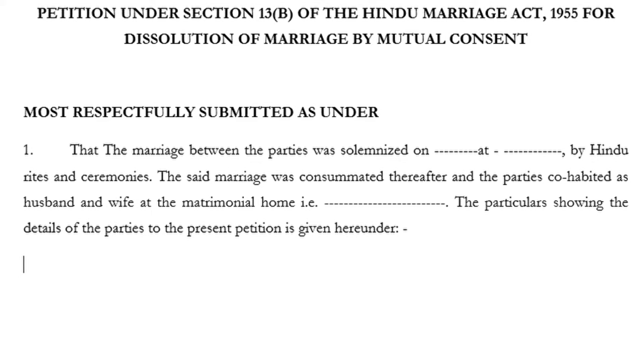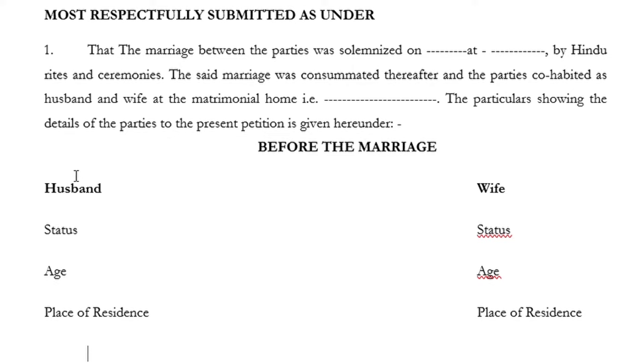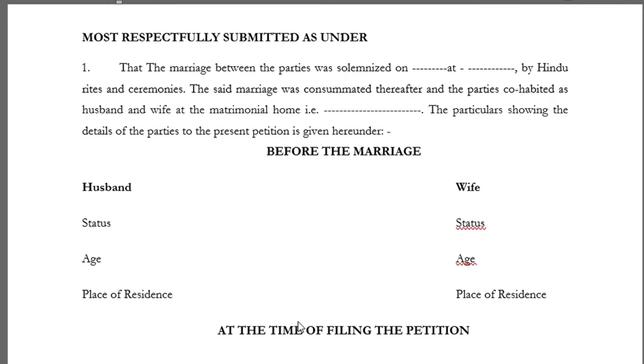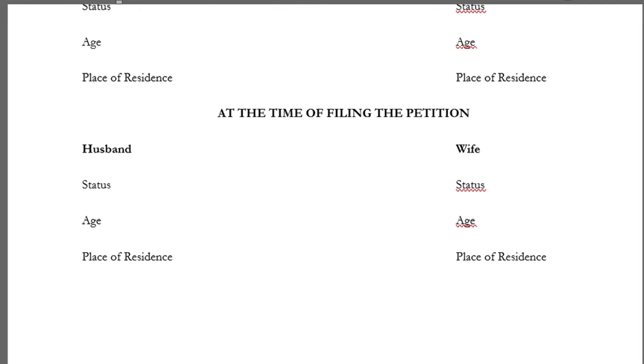The particular details of the parties to the present petition are given hereunder. We will segregate the husband and wife — their status, residence, and age. Before the marriage: husband's status, age, place of residence; wife's status, age, place of residence. At the time of filing the petition: husband's status, age, place of residence; wife's status, age, place of residence.